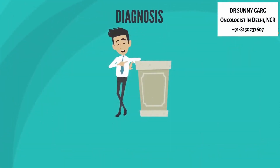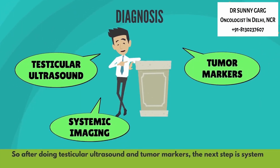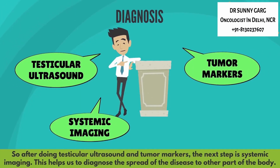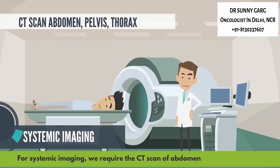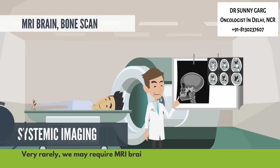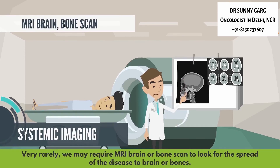After doing testicular ultrasound and tumor markers, the next step is systemic imaging. This helps us to diagnose the spread of disease to other parts of the body. For systemic imaging, we require CT scan of the abdomen, pelvis, and thorax. Very rarely, we may require MRI brain or bone scan to look for spread of the disease to brain or bones.